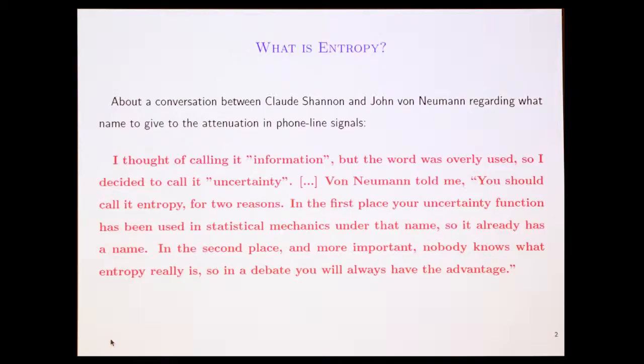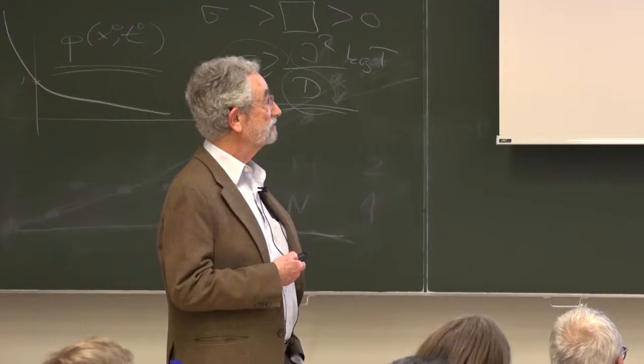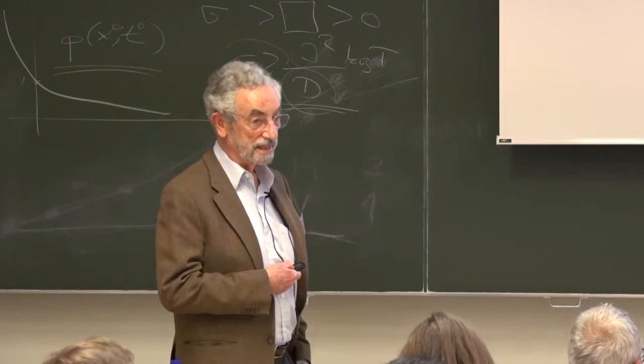Von Neumann told me you should call it entropy for two reasons. In the first place, your uncertainty function has been used already in statistical mechanics under that name. So it already has a name. In the second place, and more important, nobody knows what entropy really is. So in a debate, you will always have the advantage.